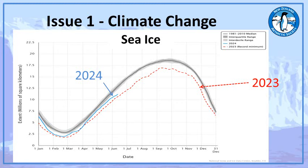Moving on more specifically to climate change: you can see the red dashed line showing sea ice accumulation in 2023. The grey lines — particularly the solid grey line in the middle — represent the median from 1981 to 2010. The 2023 sea ice accumulation was 20% less than ever previously recorded. These records are done from infrared satellites, so it's a fairly accurate record. Already in 2024 through to June, the same pattern of reduced sea ice accumulation through winter is being observed.